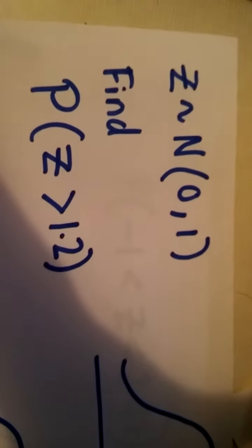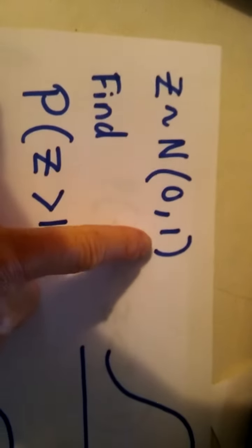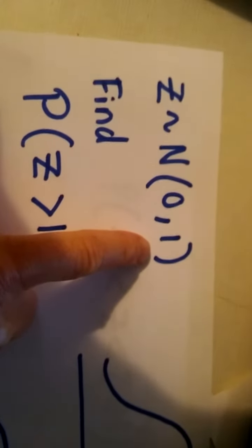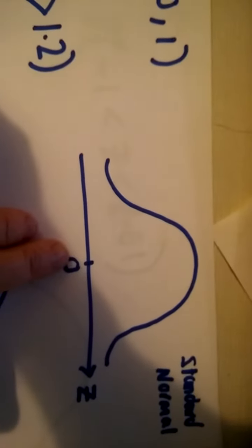Hopefully now you'll have watched Jack Brown's video where he's introduced the standard normal distribution where we have a mean of zero and a standard deviation and variance of one. The curve for this is the bell-shaped curve, mean zero and he's explained the other bits about it.